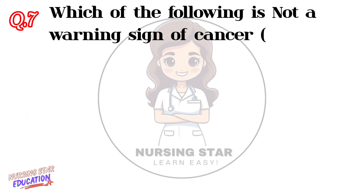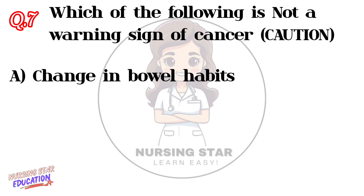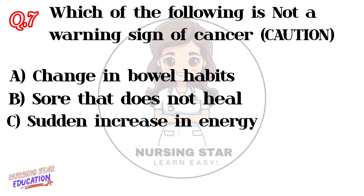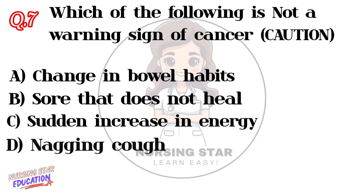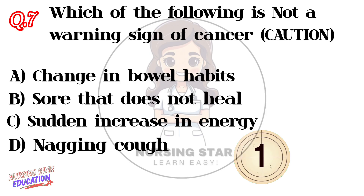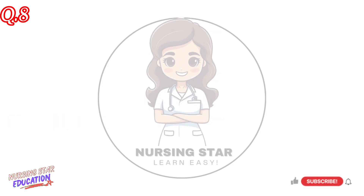Question number seven: Which of the following is NOT a warning sign of cancer (CAUTION)? Option A: Change in bowel habits. Option B: Sore that does not heal. Option C: Sudden increase in energy. Option D: Nagging cough. Correct answer: C — Sudden increase in energy.